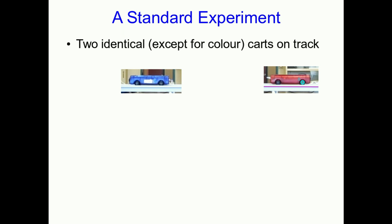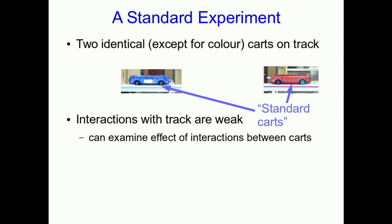That sets us up for me to introduce what we're going to do for most of the next lecture in this unit. Here is a standard sort of experiment that we should be able to learn quite a bit from. We're going to think about two identical carts on a track. I know they don't look identical. They're different colors. Hopefully you accept that the color shouldn't matter much. And we're going to call these standard carts because we've got a whole whack of them and they're all more or less the same. And the point here is that these interact with the track weakly. That's the point of these. The friction is very small. And so we can set things up so that we can examine the effect of the interactions between the carts and more or less ignore friction.